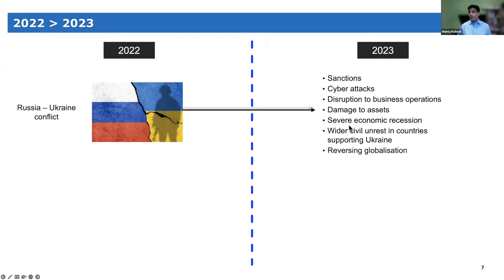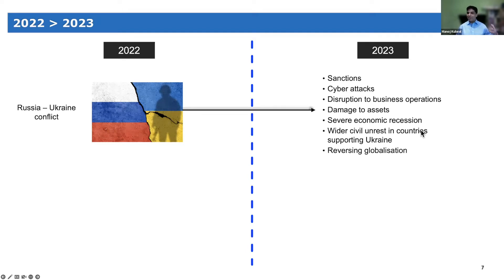The next one is the severe economic recession. At least in Europe, irrespective of whether the conflict ends in 2023, Europe is going to go through a very severe economic recession. It's not just the Russia-Ukraine conflict driving this — higher inflation and higher interest rates in the US are also contributing drivers. We'll touch on what operational risks would be affected as a result.